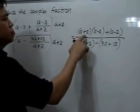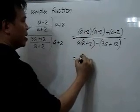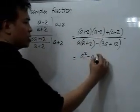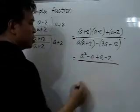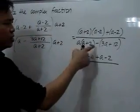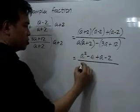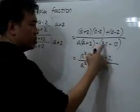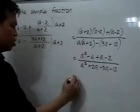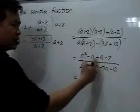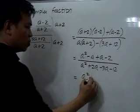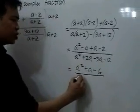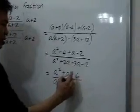We can multiply these two and have a squared minus 4. This is the product of the sum and difference of two same terms, plus a minus 2. For the denominator, we distribute a over a plus 2 and we'll have a squared plus 2a. And if we distribute the sign, we have negative 3a minus 12. We combine what we can combine, and in the numerator that will leave us with a squared plus a minus 6, and in the denominator we'll have a squared minus a minus 12.